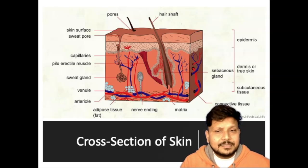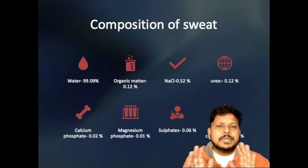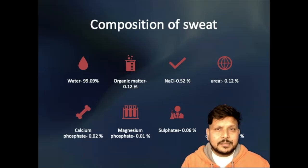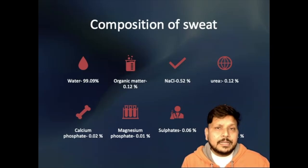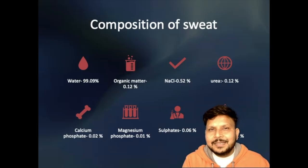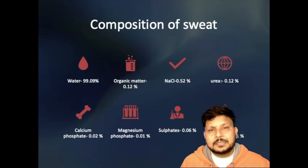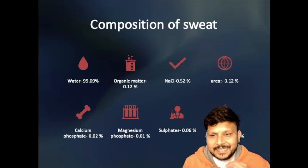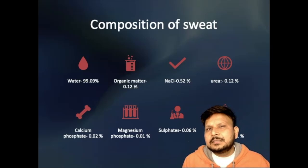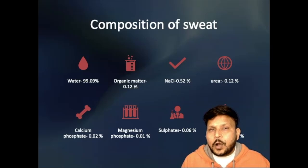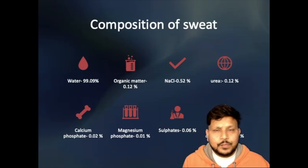The composition of sweat is mainly water — 99.9%. The organic matter includes fatty acids, amino acids, and oils. The inorganic constituent is mainly sodium chloride, which is why sweat tastes slightly salty. It also contains urea as a waste product, and calcium phosphate, magnesium phosphate, sulfates, and potassium carbonate. These constituents are what make latent fingerprints visible when chemicals are applied at a crime scene — the chemicals react with these components to develop the fingerprints.